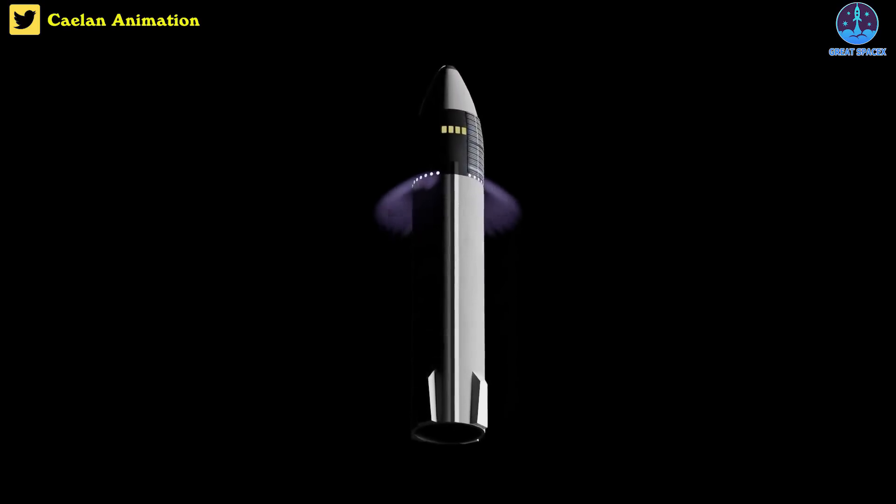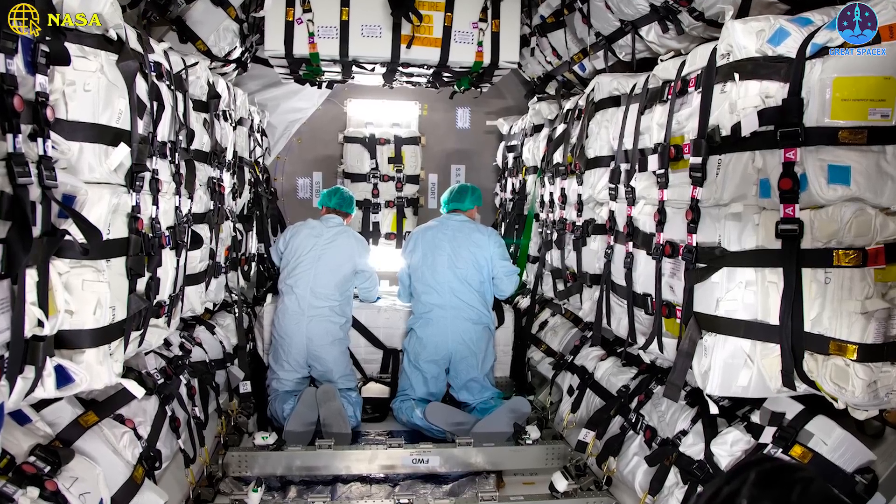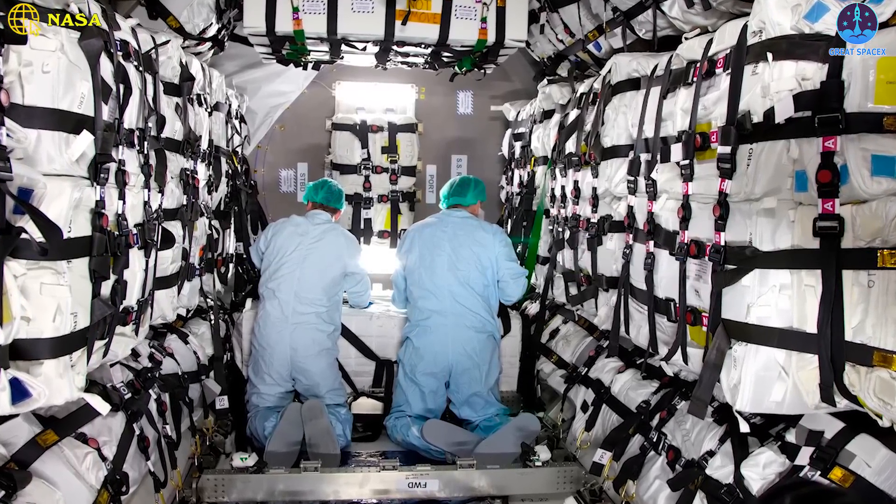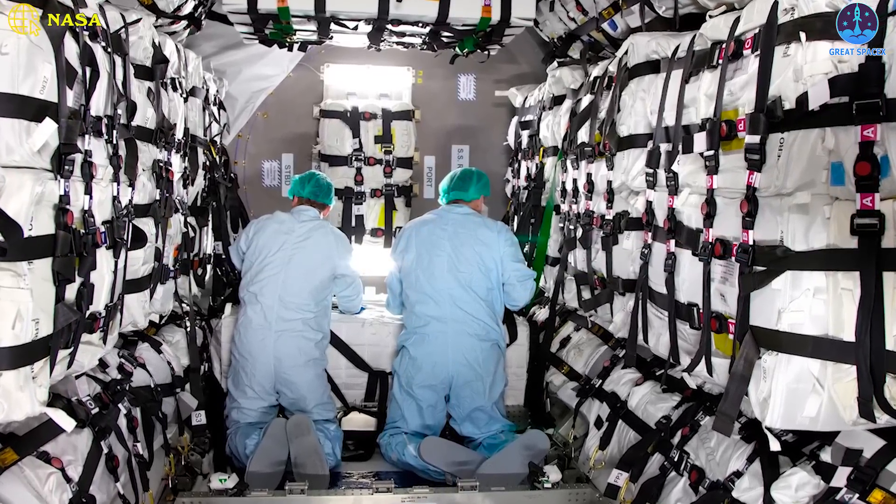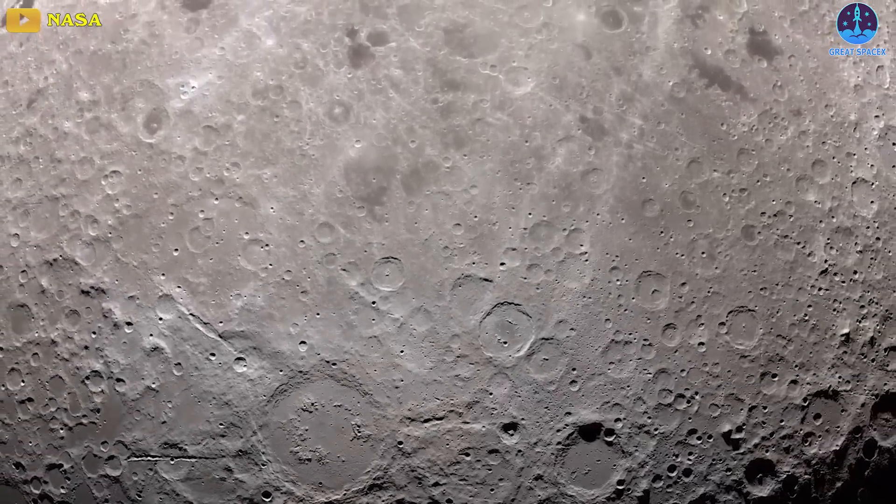With barely any modification, the Starship architecture SpaceX and NASA are already developing could be used to deliver dozens of tons of pressurized cargo to cislunar space, lunar orbit, the Gateway, the lunar surface, or anywhere else that NASA wants.